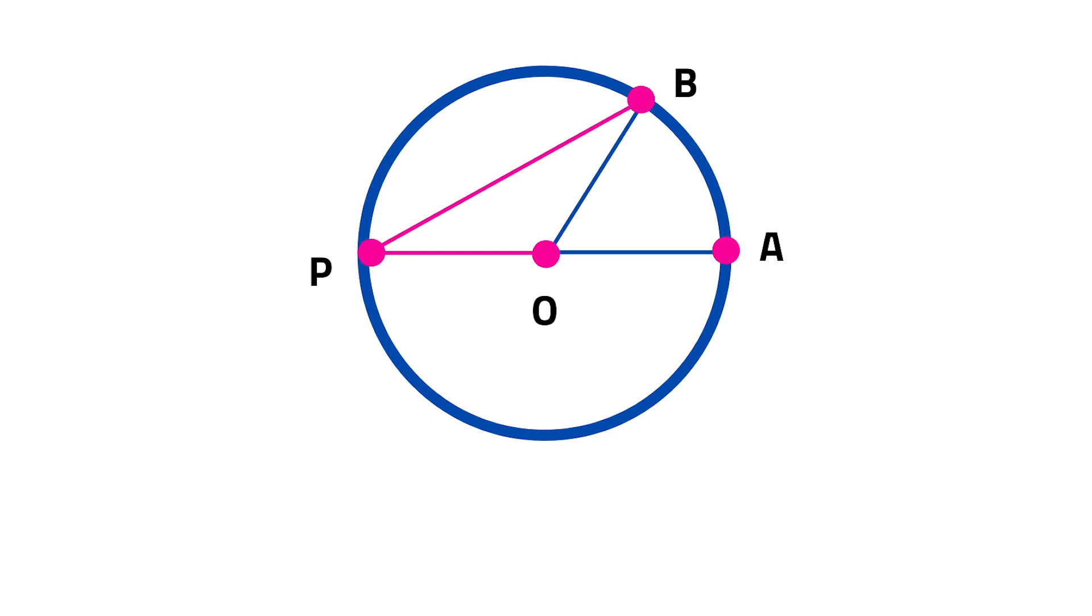Let us prove the theorem. Suppose the center O is on ray PA. Draw the central angle, angle AOB. Since OB is equal to OP, both are radii, then triangle BOP is isosceles and so, angle OPB is equal to angle OBP. By the exterior angle theorem applied to angle AOB and triangle POB, angle AOB is equal to angle OPB plus angle OBP is equal to 2 times angle OPB. Since angle OPB is equal to angle APB, it follows that angle APB is equal to 1 half of angle AOB.